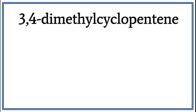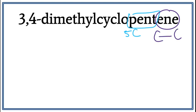Let's draw the structure for 3,4-dimethyl-cyclopentene. Pent tells us that there are five carbons present in the longest carbon chain. Ene tells us that there is a double bond present between the carbons — it is an alkene. When we see the word cyclo, this means that the longest carbon chain is arranged in a ring. Every time you see the word cyclo, you have to draw a ring.